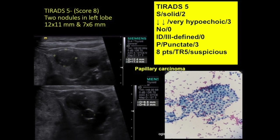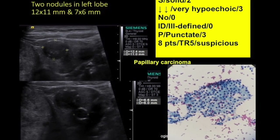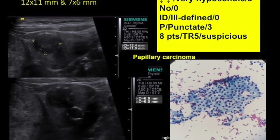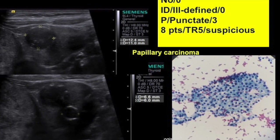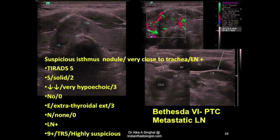Next case: two nodules — multicentric PTC. Both are solid, very hypoechoic, not taller than wide, ill-defined margins, with punctate foci and broken rim calcification. We quote the highest-scoring feature; total score of eight — TR5. Biopsy: papillary carcinoma. Another case of papillary carcinoma also shows lymph node extension with suspicious features including microcalcifications, cystic changes, and random vascularity in cervical lymph nodes. Total TR9 — highly suspicious with metastasis. The lymph node metastasis score is added to the thyroid nodule score.